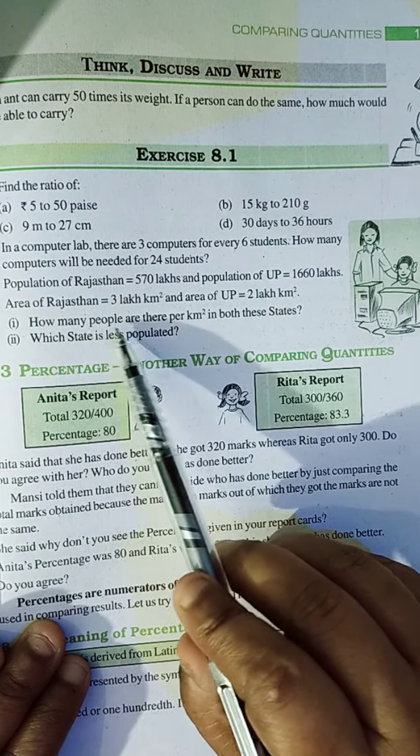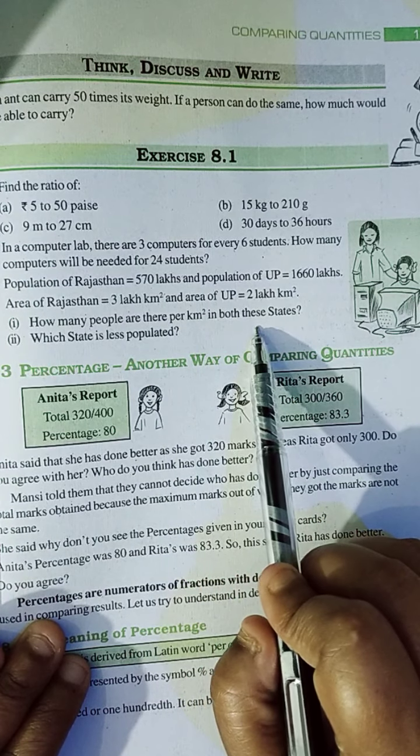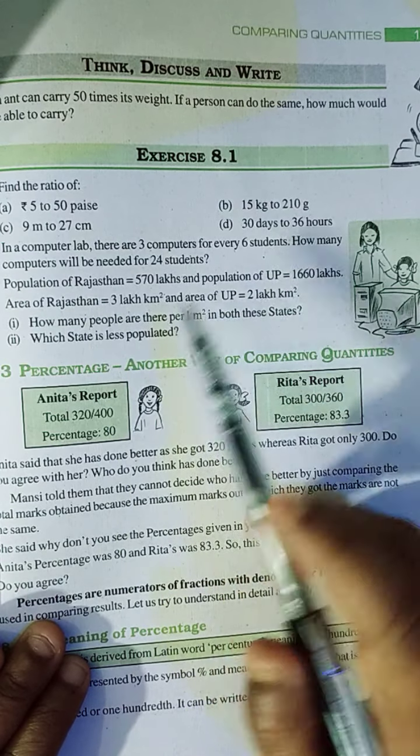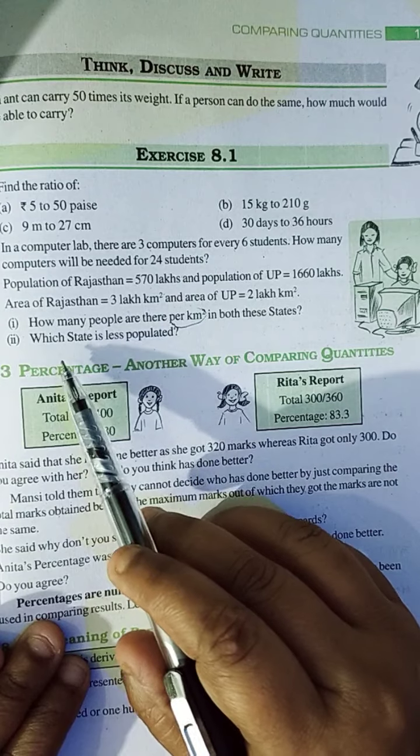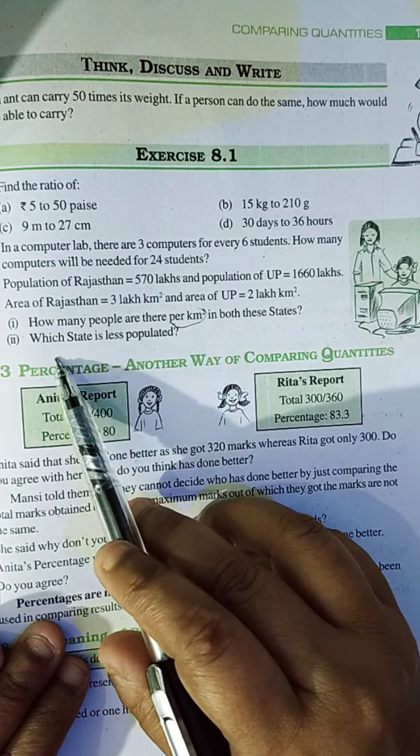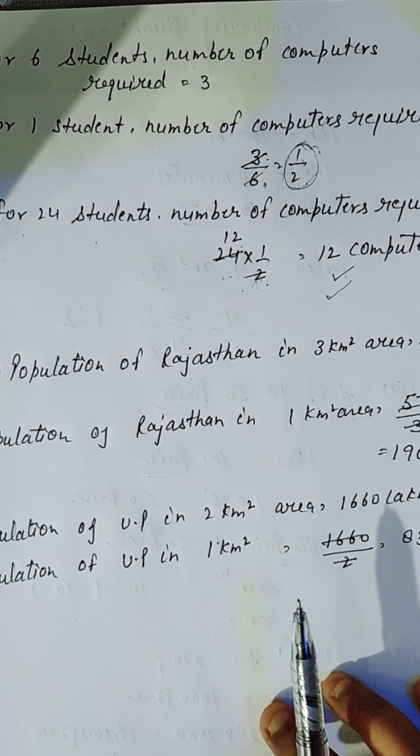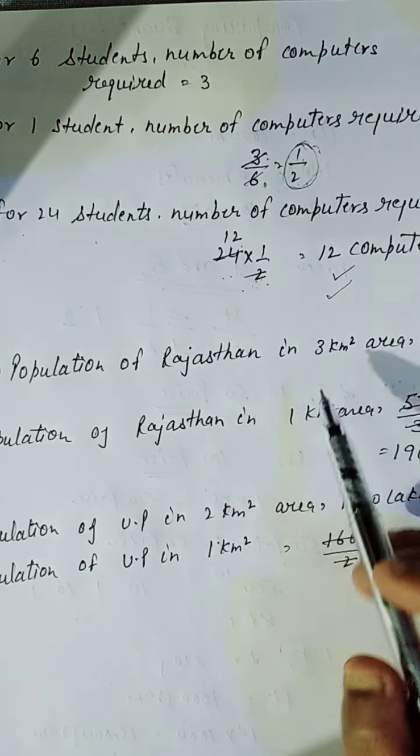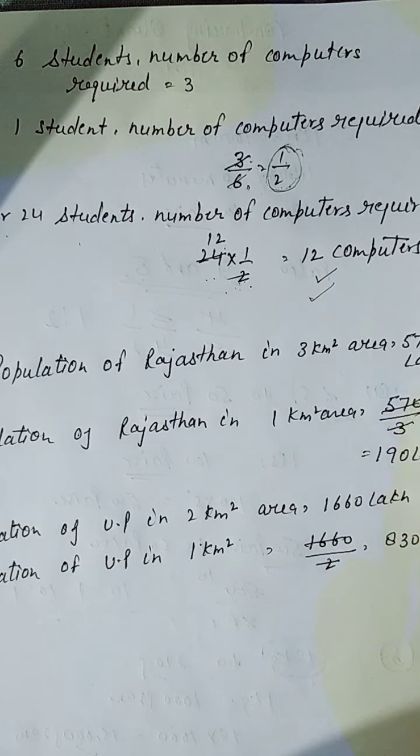First option is that, how many people are there per km area in both these states? Yianni, these two states per km, yianni ki, hamein one ki value nikalni hai. Per km, matlab, one ki value nikalni hai. Which state is less populated? Chaliye, hamein nikalte hai. Aap agar dekhein, hamein question mein given hai kya? Population of Rajasthan. Given hai, hamein population of Rajasthan in 3 km area 570 lakh.